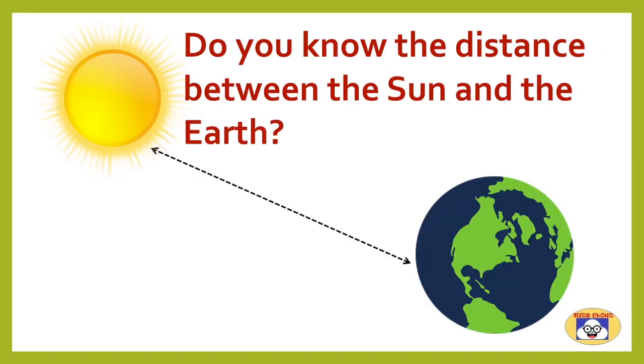Do you know the distance between the Sun and the Earth? Your time starts now. Five, four, three, two, one. Okay, fine. The answer is 150 million kilometers. Here we have used kilometers to express the distance.